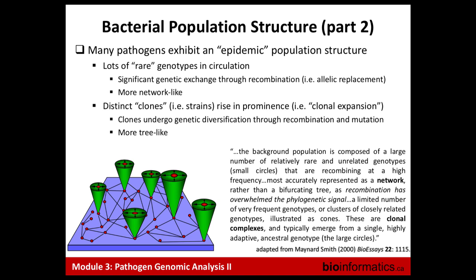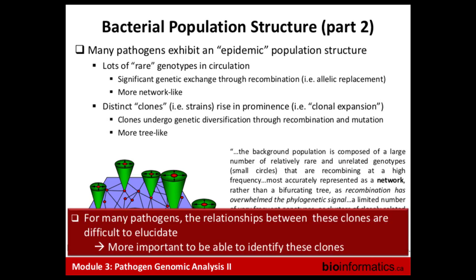The epidemic population structure is what we like to see in pathogens. There are lots of rare genotypes circulating, and when one finds a host there's a sudden proliferation of that genotype. One way to visualize this is the cones model — you have all these strains, and when there's a sudden expansion, a large number of related strains appear simultaneously. This would be your classic outbreak scenario. The problem is it can make inter-strain relationships difficult to keep track of.